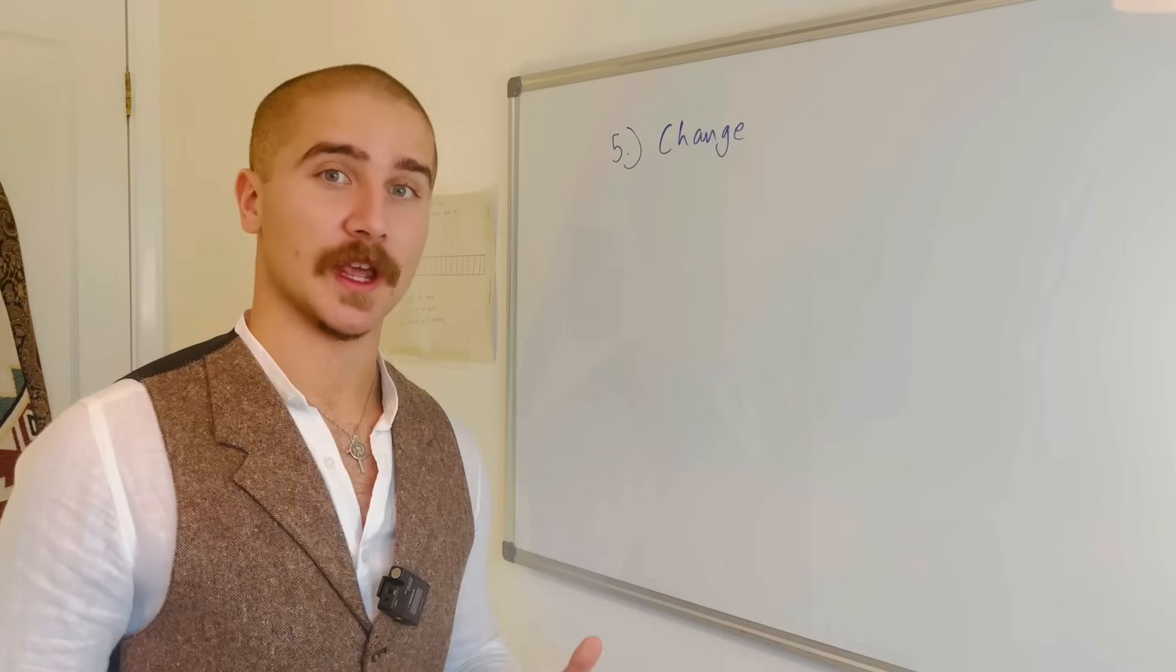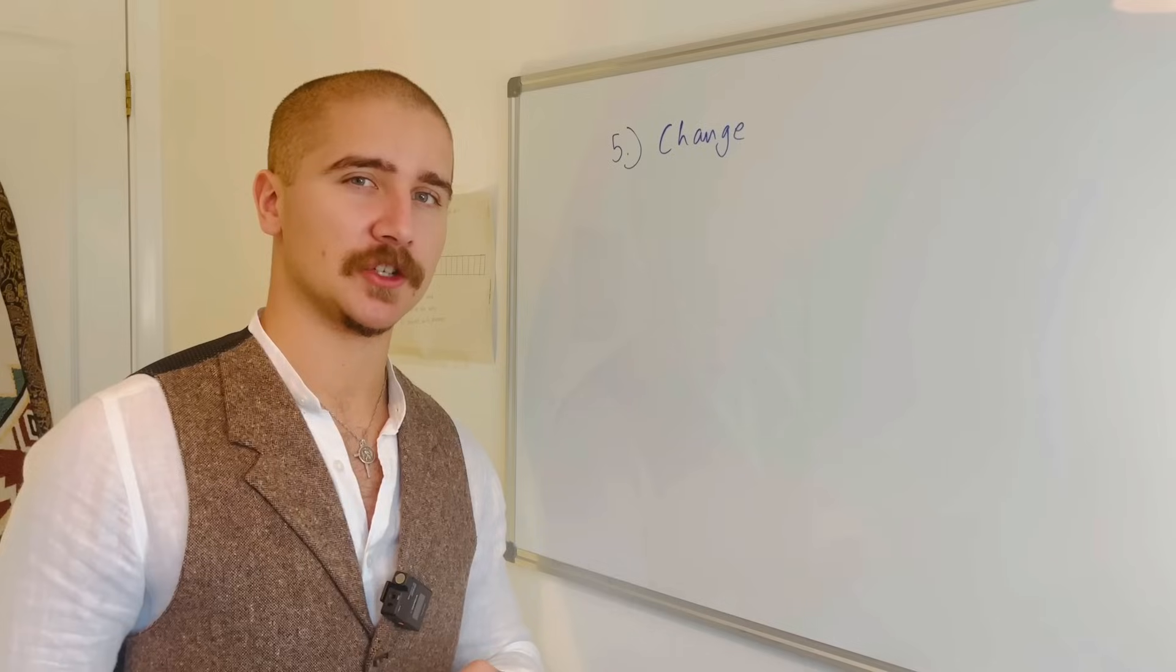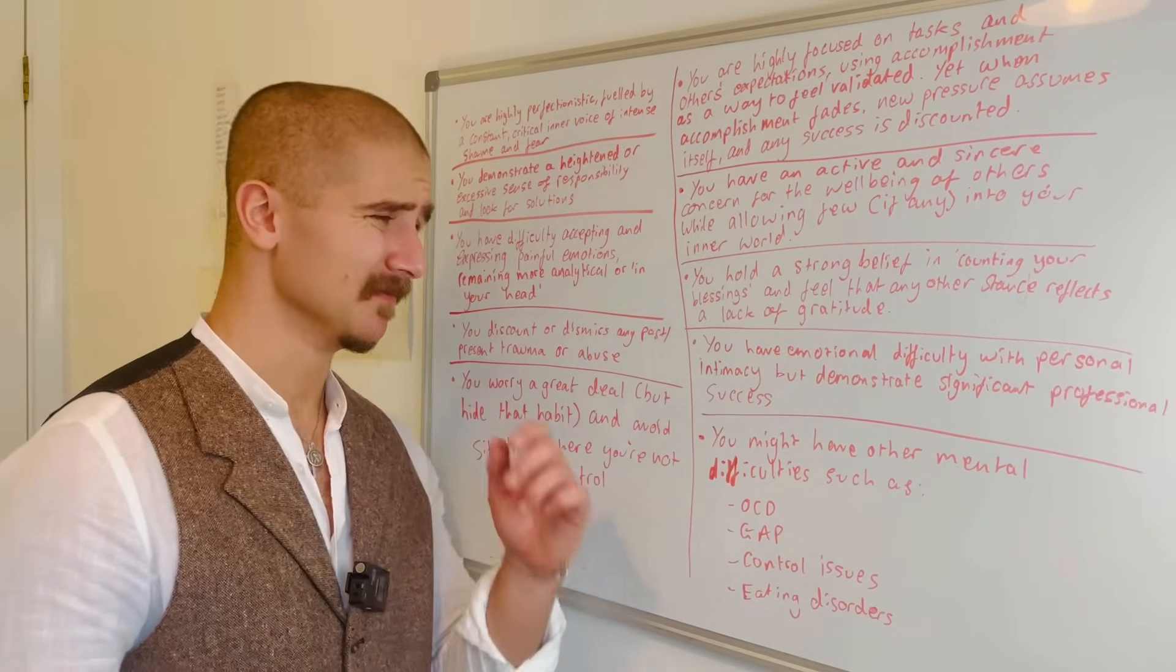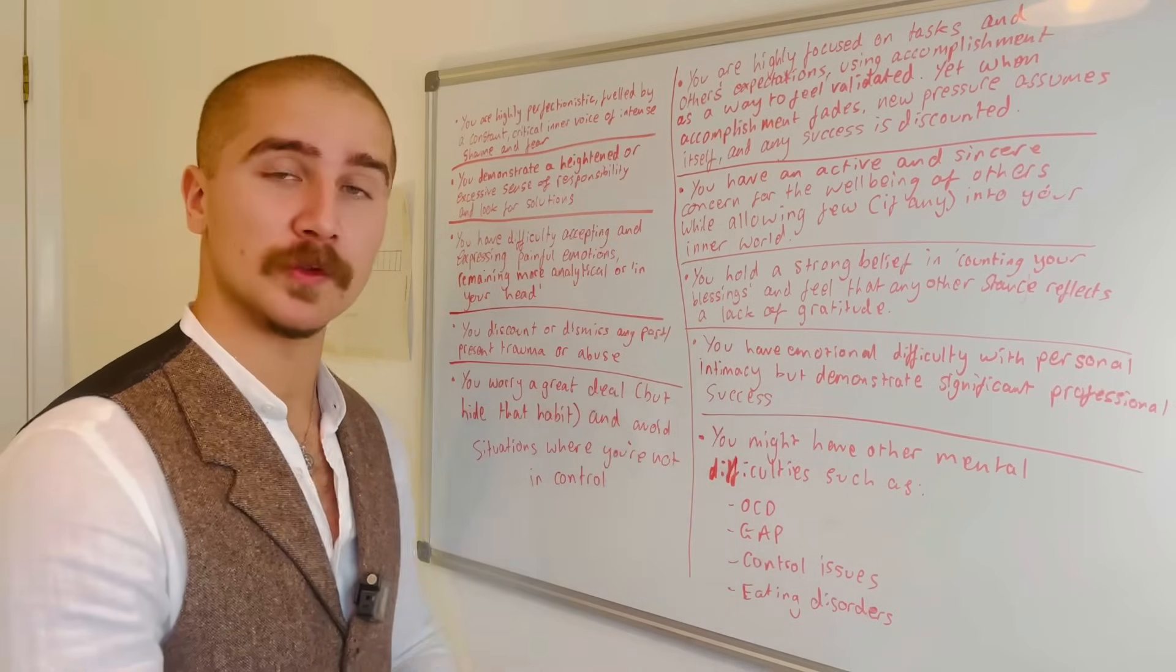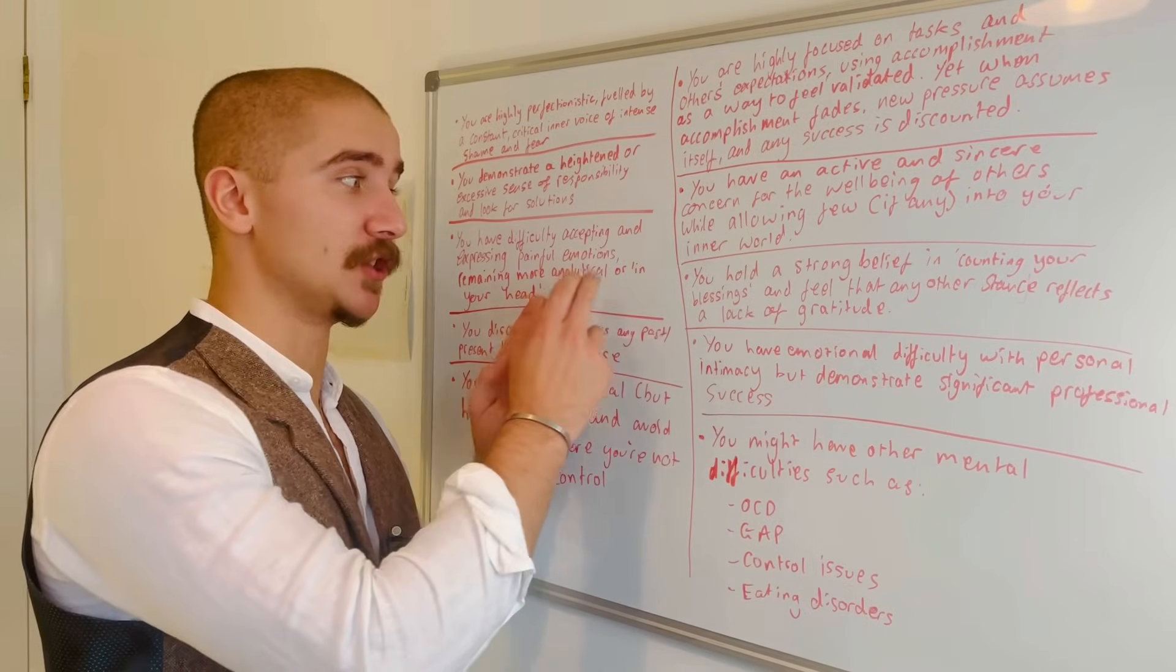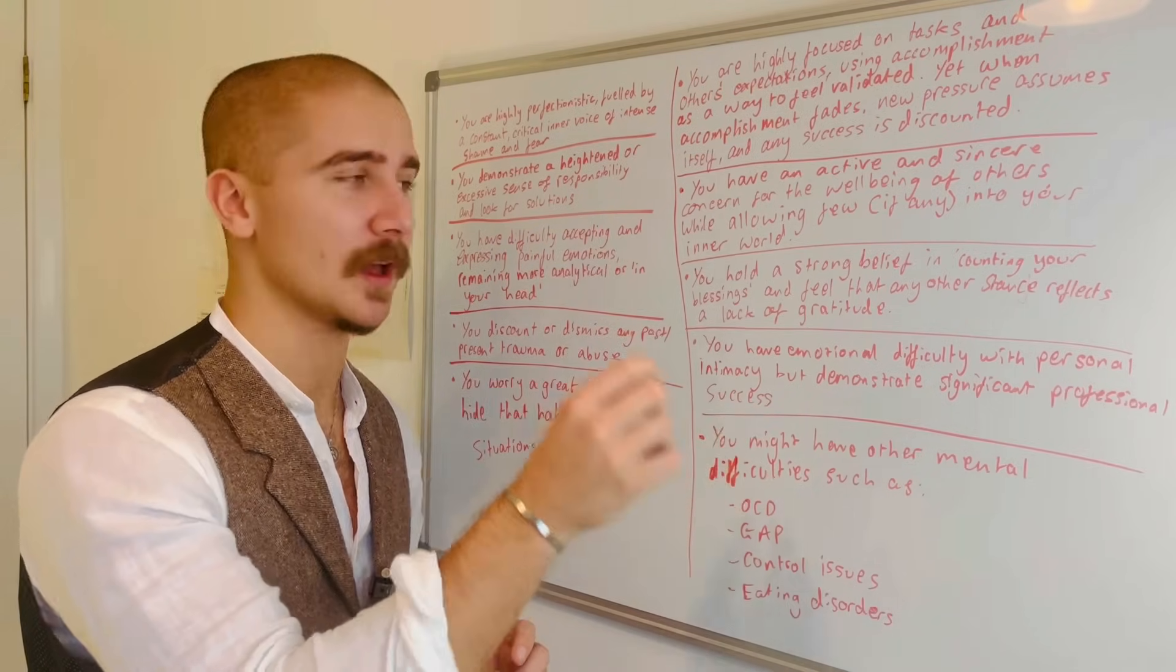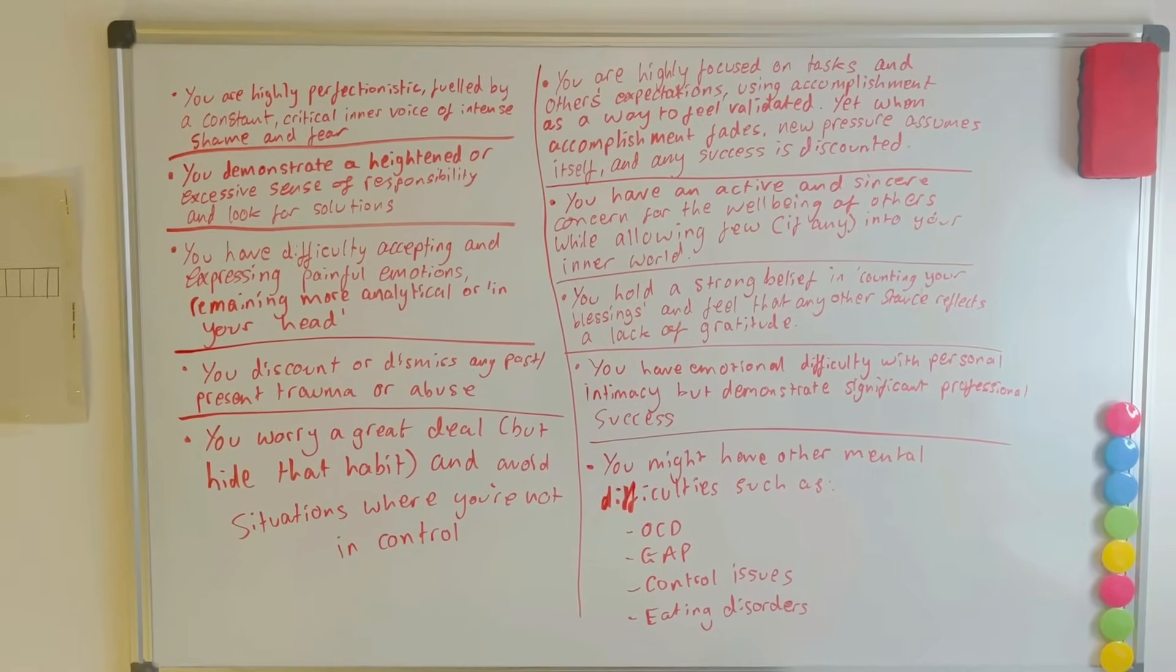Lastly, point number five, change. Remember the 10 signs of hidden depression we covered before? Hope comes through changing your behavior. So what you do in this final stage is you work through this list one by one, perhaps with a friend or alone, and you see how you can challenge falling into these points. Now, again, my friend, don't do this perfectly. Find the easiest one that sticks out to you and just start there. I'll pan the camera like this so you can take a screenshot if you want.